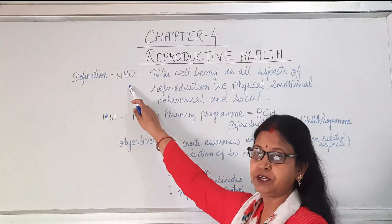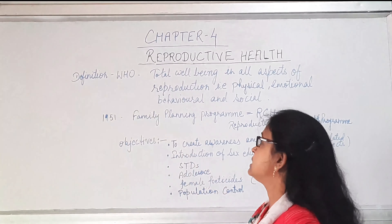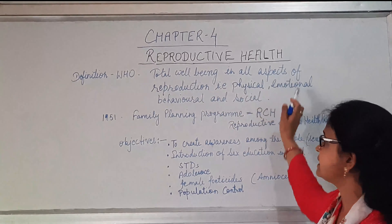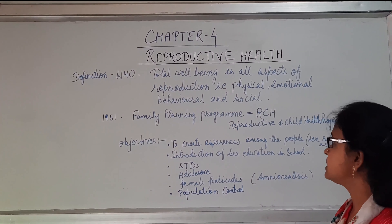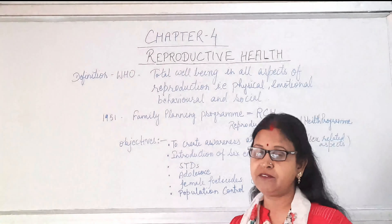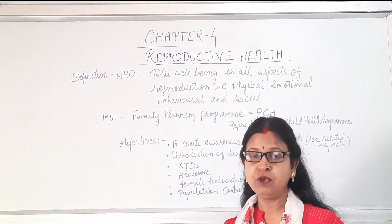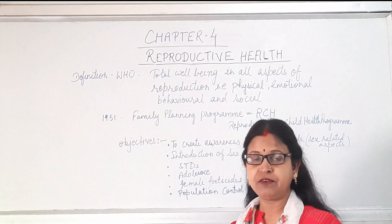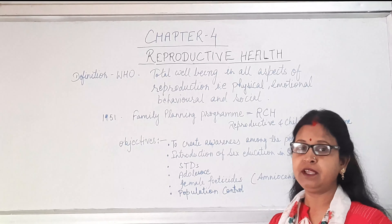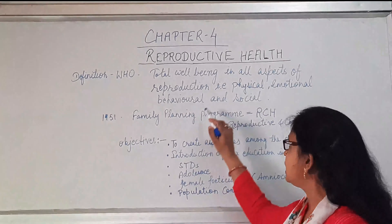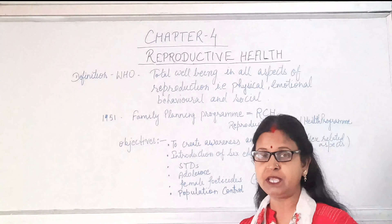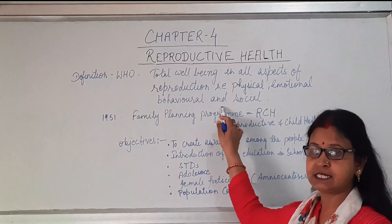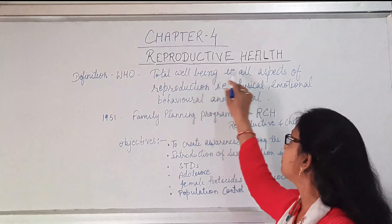According to WHO, the World Health Organization, reproductive health can be defined as total well-being in all aspects of reproduction — that is physical, emotional, behavioral, and social. That means all people should have normal reproductive organs and normal functioning, and they should also be healthy from the emotional and behavioral point of view.